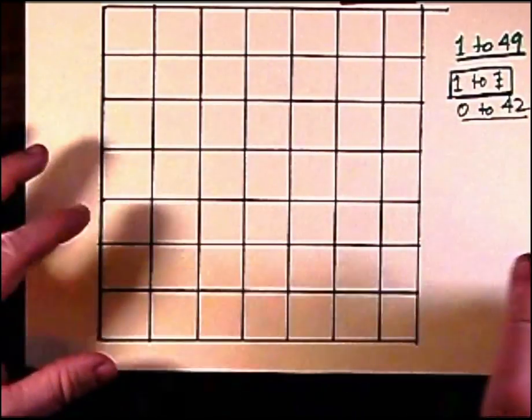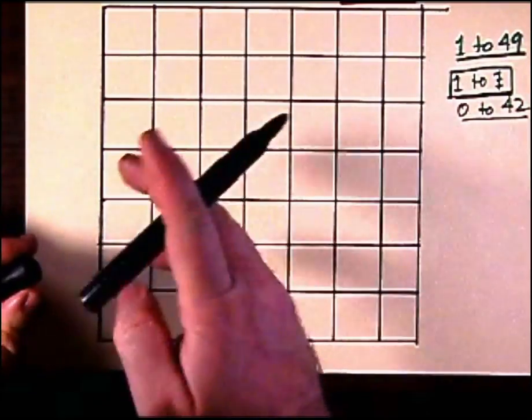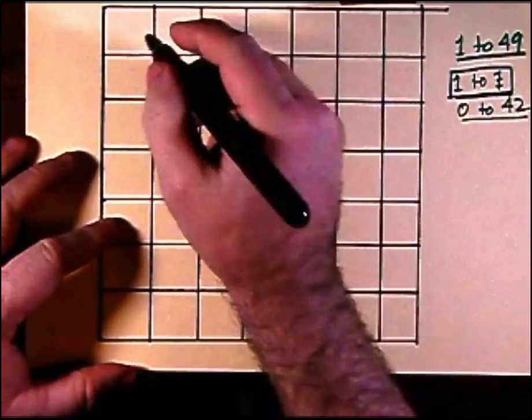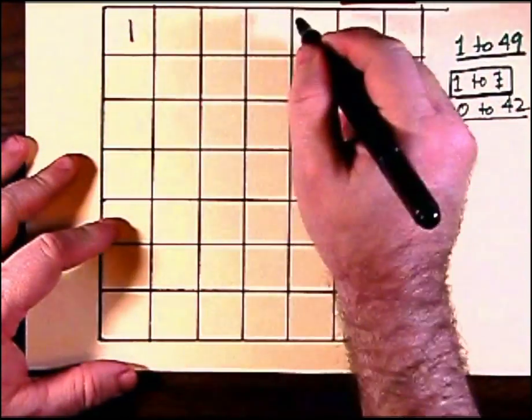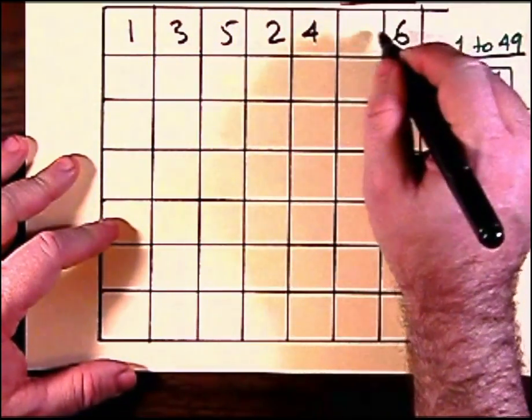The first square will consist of the numbers from 1 to 7. And what we're going to do is we're just going to arrange them randomly on the first row. So here we go, we're just picking squares to sequentially put the numbers 1 through 7.